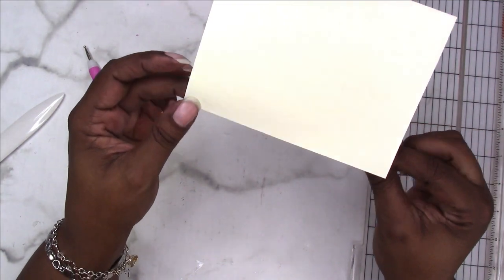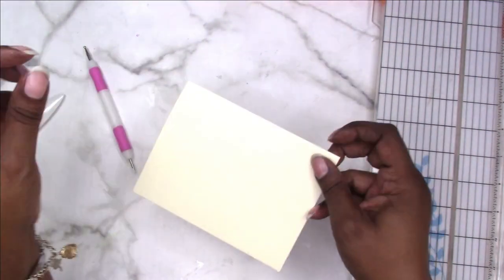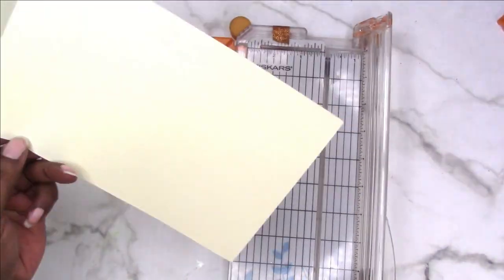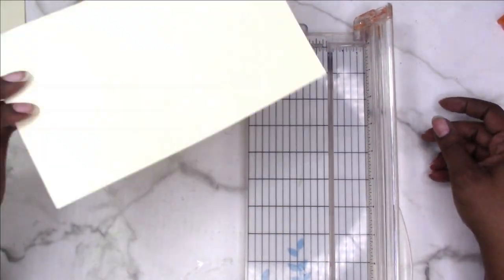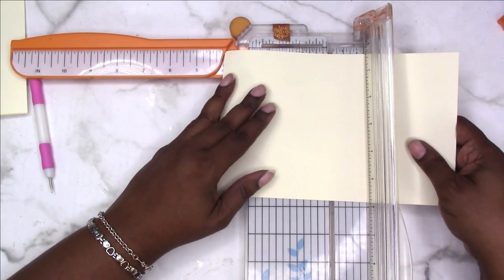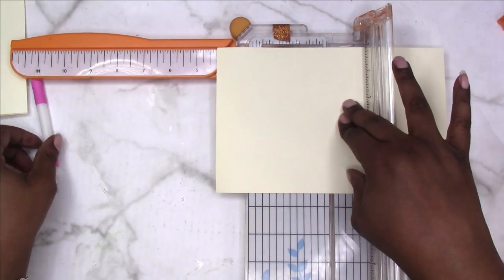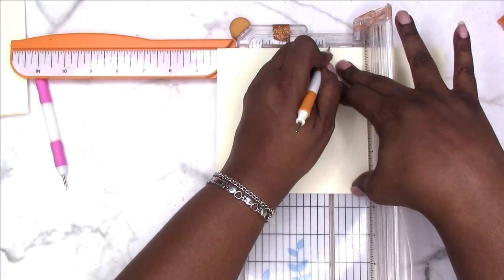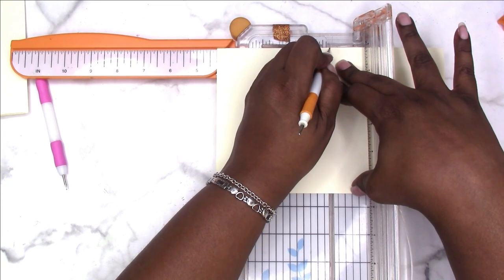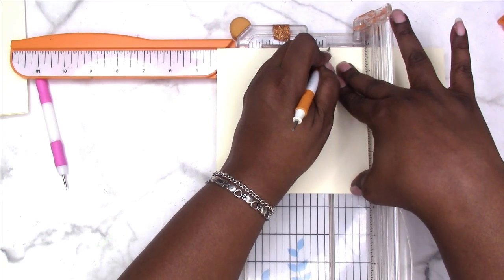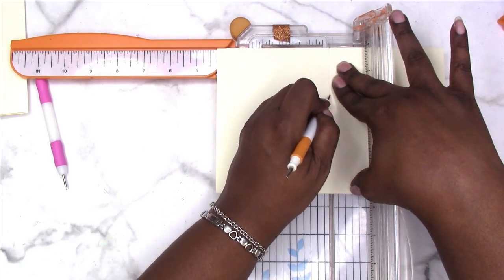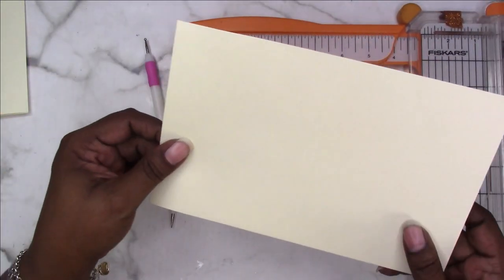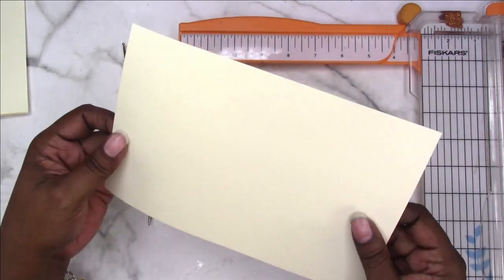Let's try that again. I'm going to use the Fiskars, find that indention in the paper trimmer, and carefully slide down. Then we have our score.